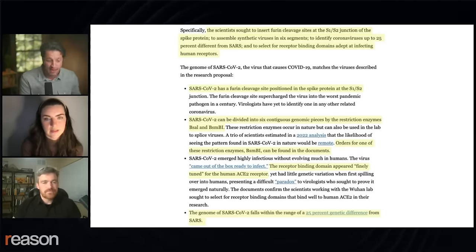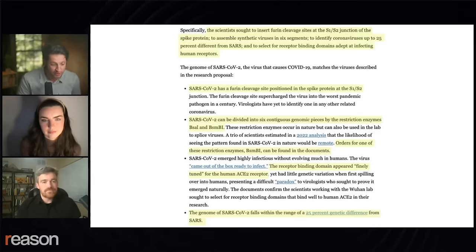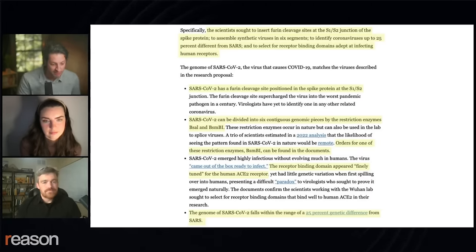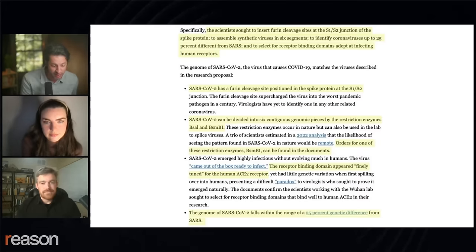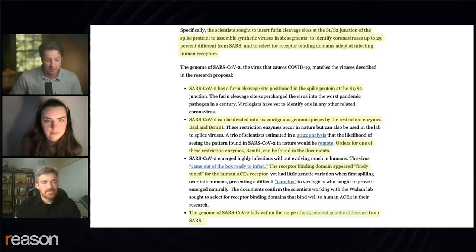SARS-CoV-2 has a furin cleavage site, which has been discussed at length. SARS-CoV-2 can be divided into six contiguous genomic pieces by the restriction enzymes BSAL and BSML, and orders for one of those enzymes, BSML, can be found in the documents. The receptor binding domain appeared finely tuned for the human ACE2 receptor, and the genome has the genetic differences from SARS.